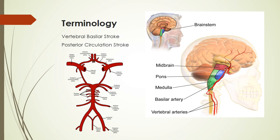Brainstem strokes can be identified according to the location of the stroke in the circulatory system, as well as the location of the lesion itself. A vertebrobasilar stroke will have a blockage in either the vertebral arteries or the basilar artery. A posterior circulation stroke, also called a posterior circulation infarct (POCI), occurs within the posterior circulation supplying one side of the brain, and this term may also include the vertebrobasilar arteries. The circle of Willis from a ventral view shows where the posterior circulation arteries can be found.